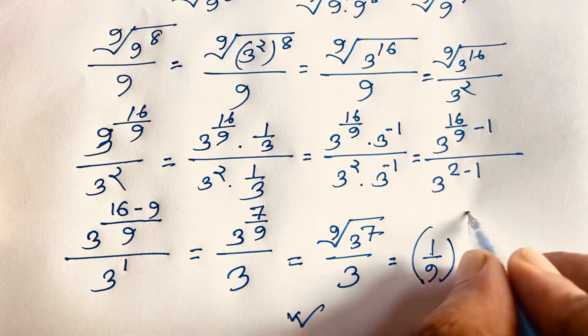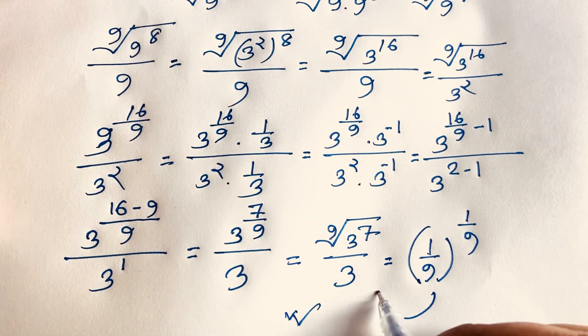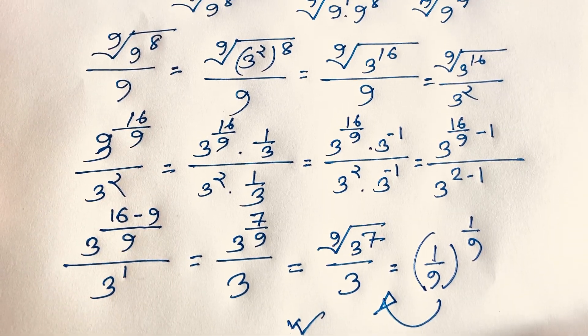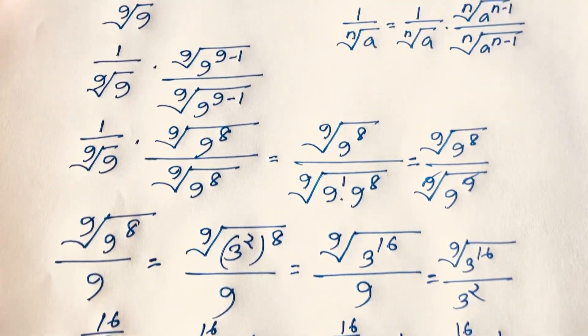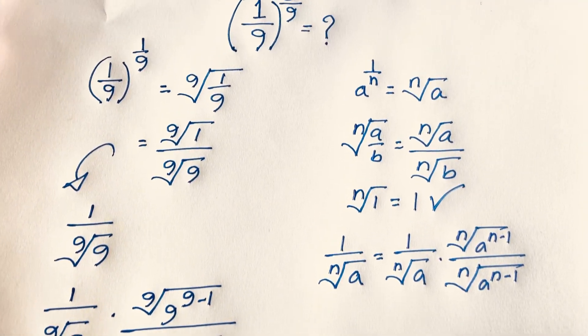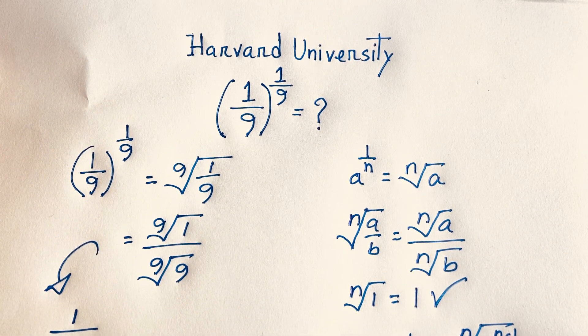So (1/9) to the power 1/9 equals the 9th root of 3 to the power 7, over 3. This is our final answer. Thank you all — if you enjoyed this video, subscribe to my channel for other interesting videos. Goodbye, take care.